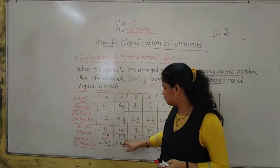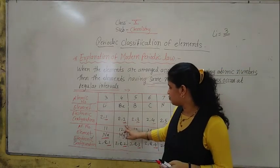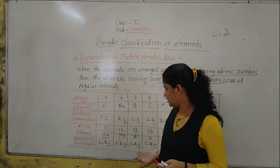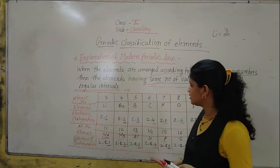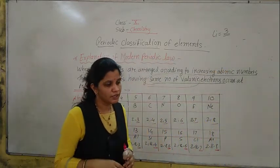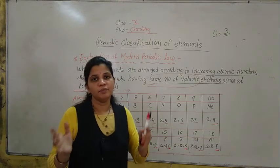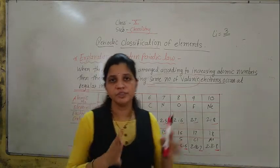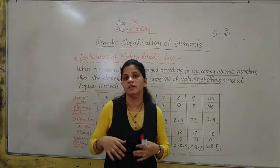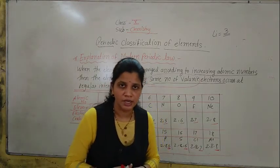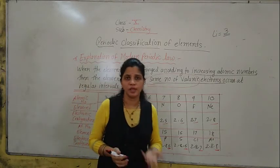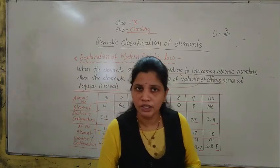Then beryllium has 2 valence electrons and magnesium also has 2 valence electrons. This is a simple explanation of the periodic table. In the next period, we will see which elements are in particular groups and their properties — that everything we are going to learn. If you have any problem related to this point, you can contact me. Thank you.